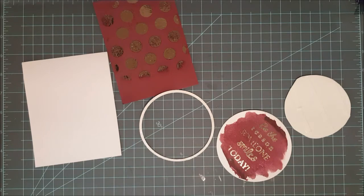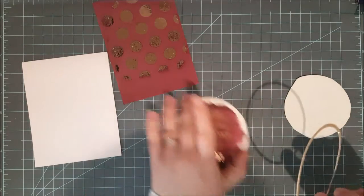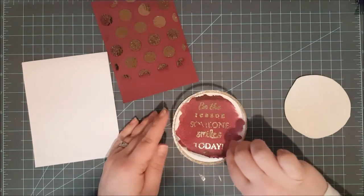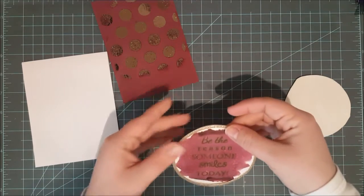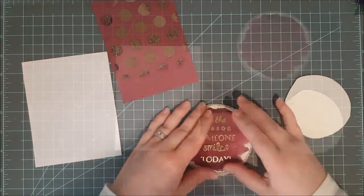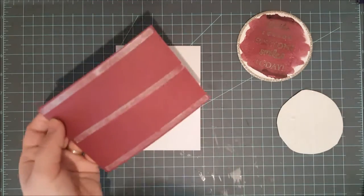Now I'm going to start putting all the components together. I've got my glossy accents out and I'm going to put a thin little layer of that over my glitter frame there and just lay that over the top of my watercolor circle. I'll press that down and then I did sit something heavy on top of that just to hold that in place.